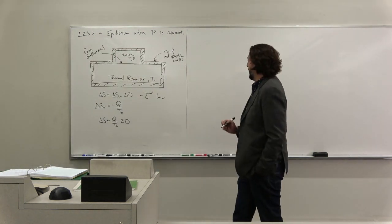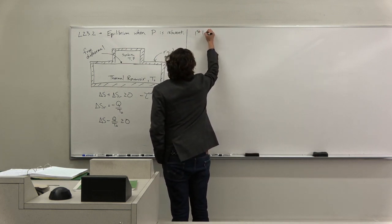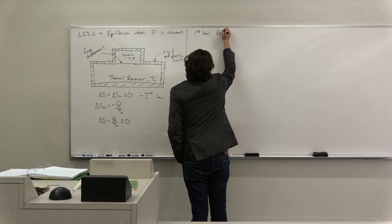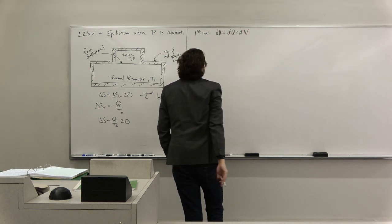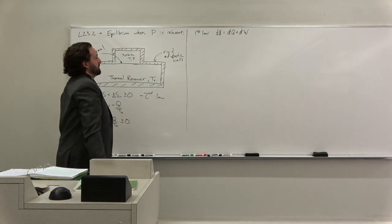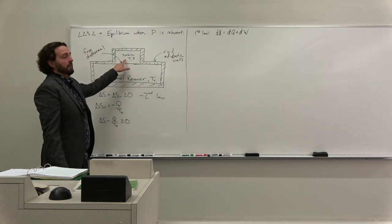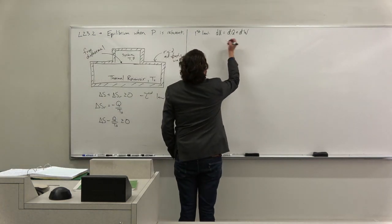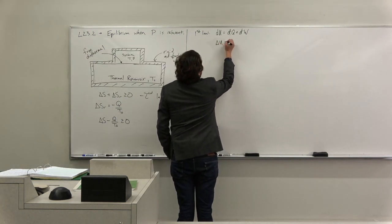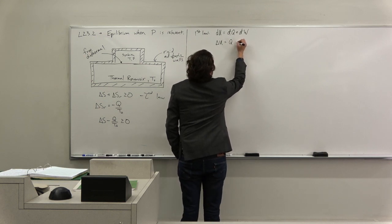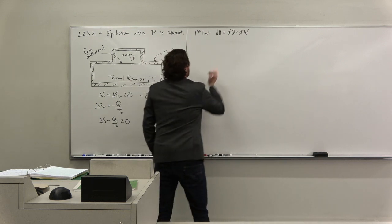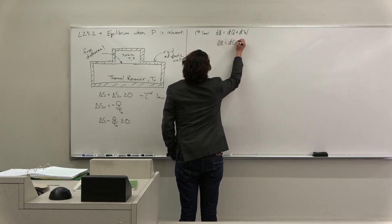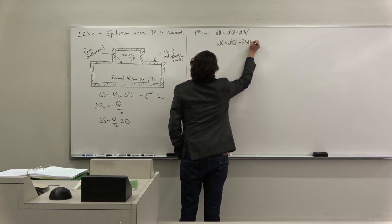Now we need to compare with our first law, and our first law was dU equals dQ plus dW. But now, because my volume can change, we need to say that delta U is going to be Q minus, or dU equals dQ minus pdV.